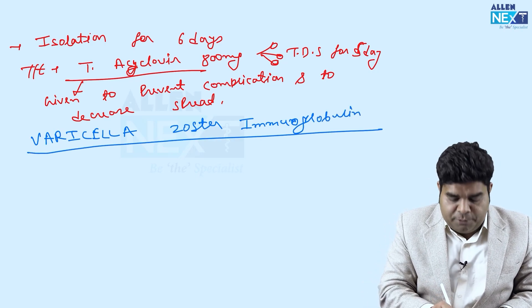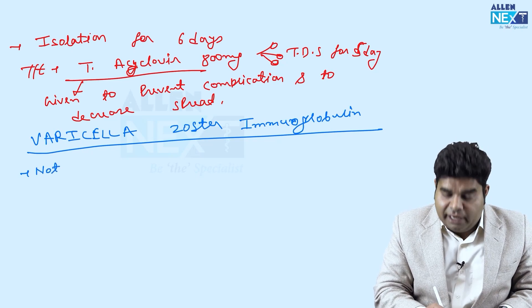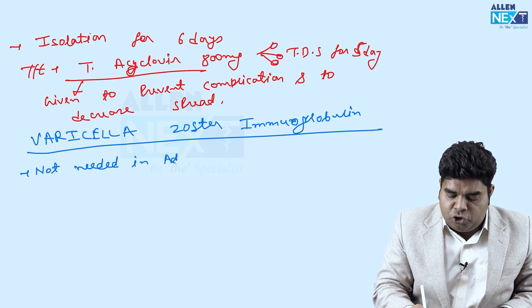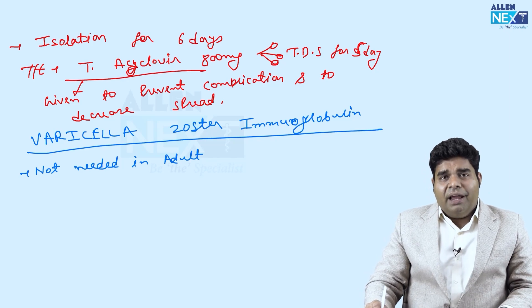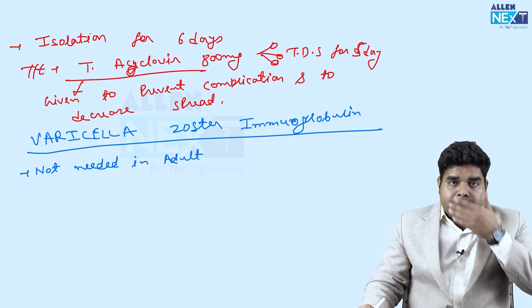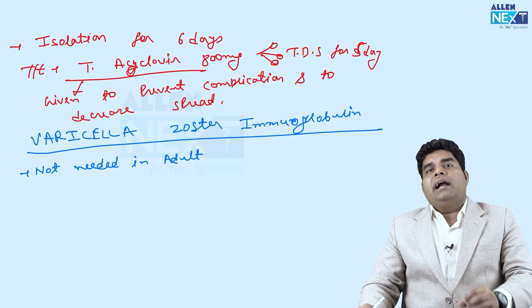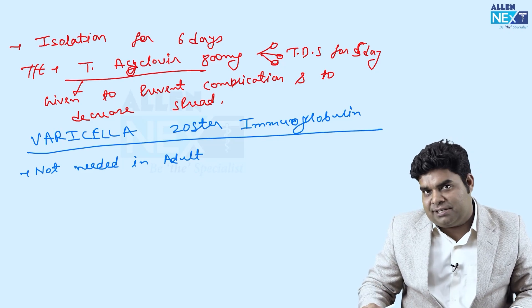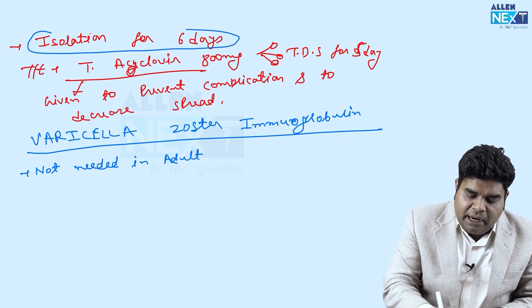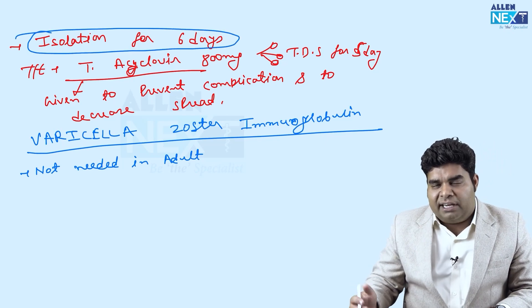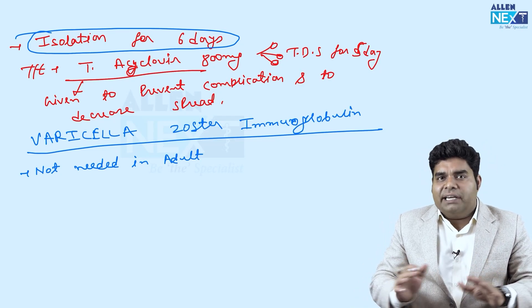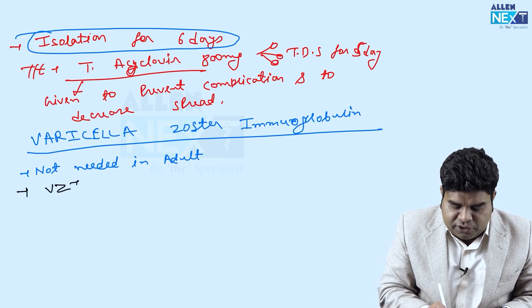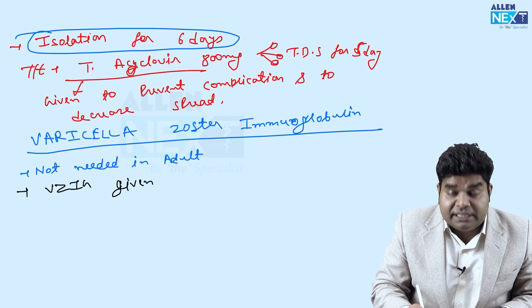Varicella zoster immunoglobulin is not needed in adults, because it is given to prevent serious complications, and serious complications do not occur in adults. That was the NEET question: in a boys' hostel, people develop pleomorphic centripetal rashes coming out from the skin surface — how long will you isolate them, and will you give varicella zoster immunoglobulin? The answer is: in adults, it is not needed. But if you do need to give it, varicella zoster immunoglobulin must be given within 72 hours.